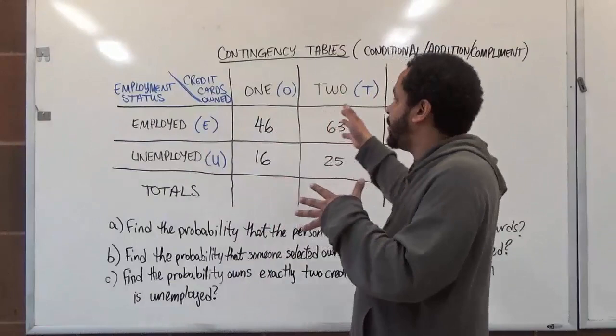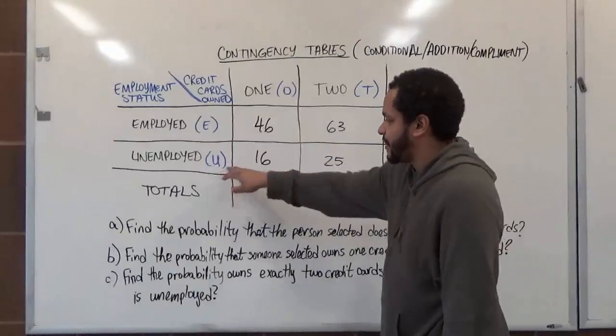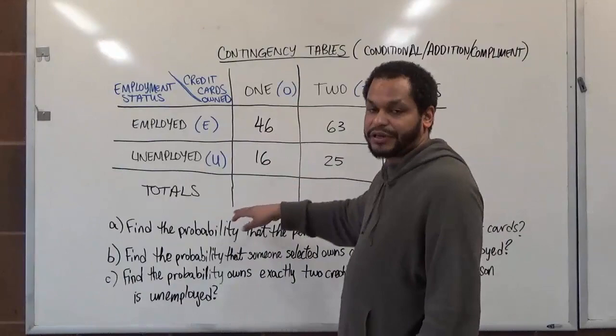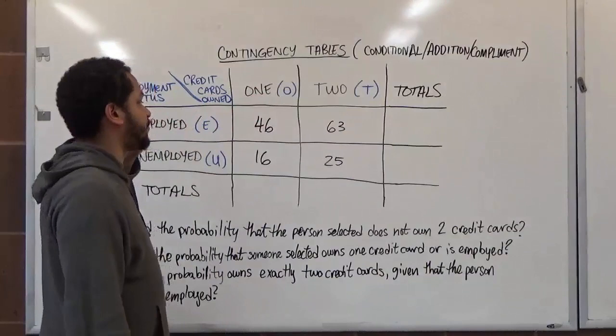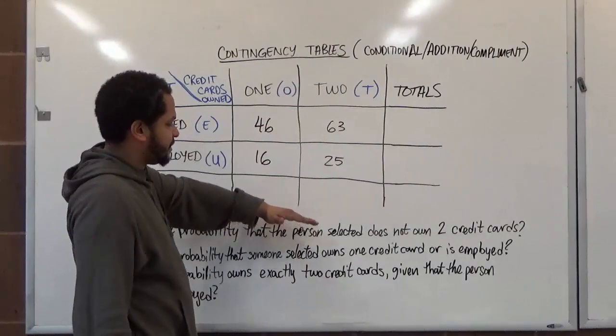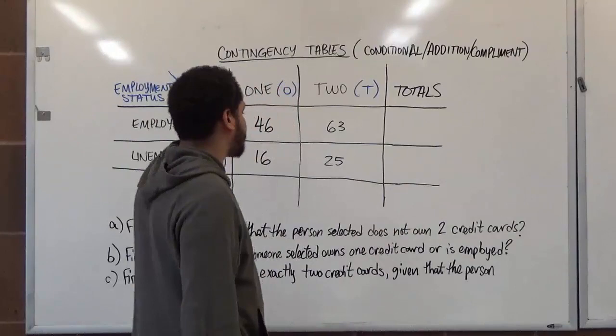Before we begin, we want to get the totals for all people in each category: the total number of employed people, the total number of unemployed people, the total with two credit cards, and the total with one credit card. Since this is a population, we'll find the grand total. The row totals and column totals should both add up to the same grand total in the bottom right corner.